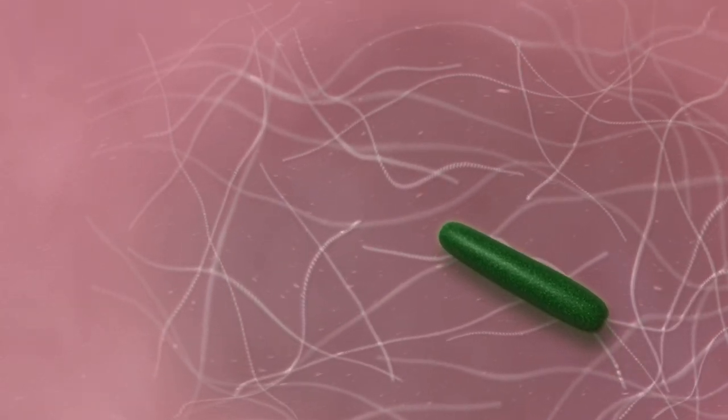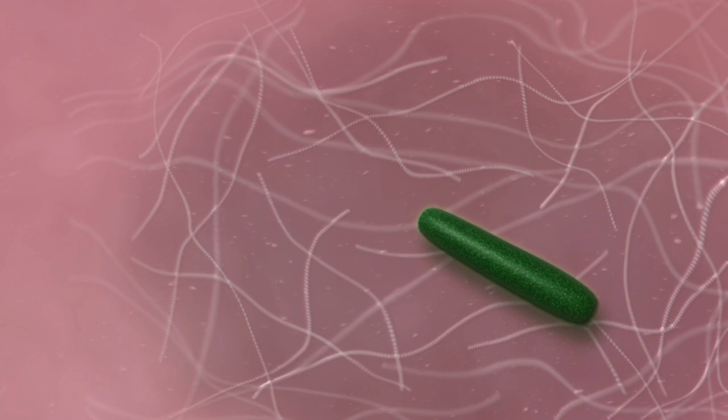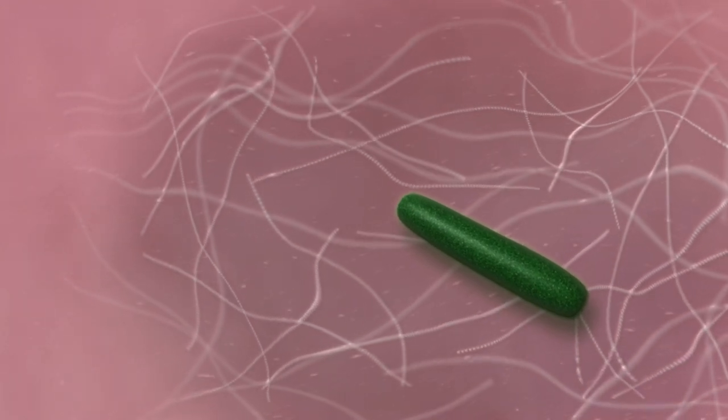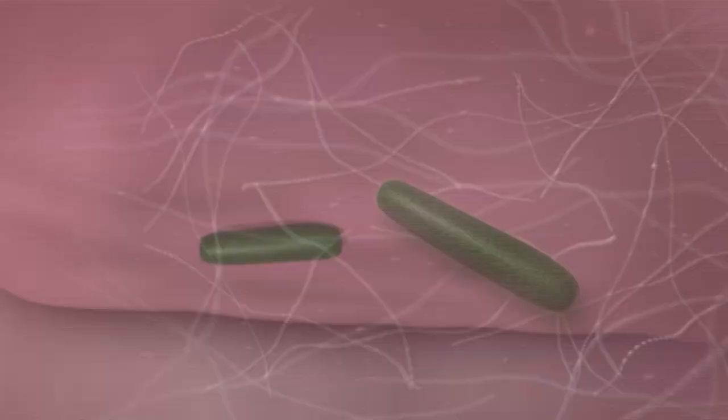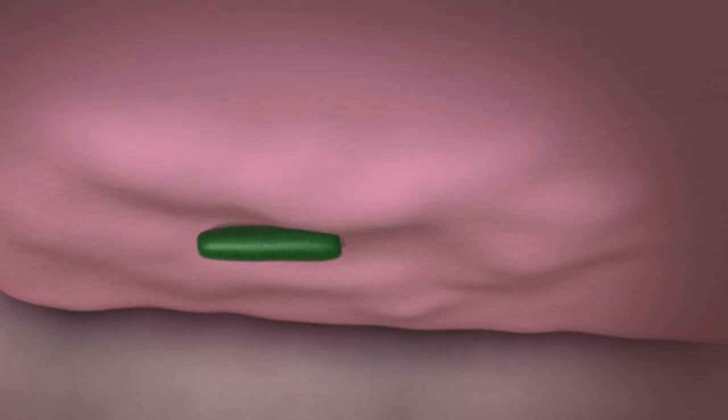These factors trigger dramatic remodeling of the host cytoskeletal structure that can be seen as distinct membrane ruffles on the epithelial surface. The membrane folds around the bacterium and ultimately leads to its incorporation into the cell within a vacuole.